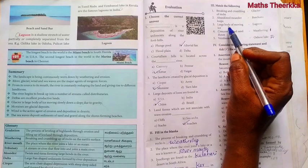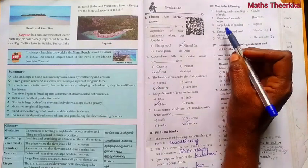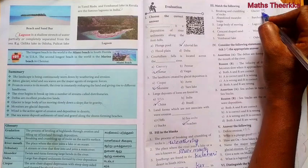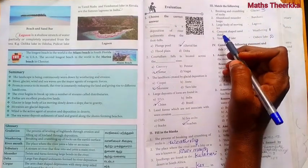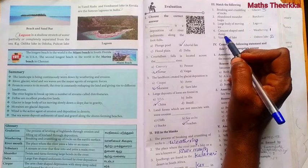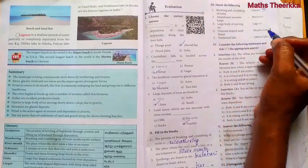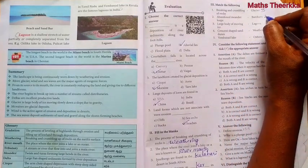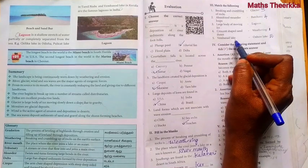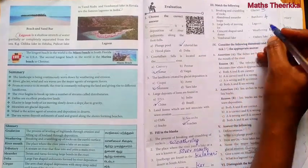Third one, large body of moving ice, glacier. Fourth one, crescent shaped sand dunes, barchans. Fifth one, Vembanad Lake, lagoon.